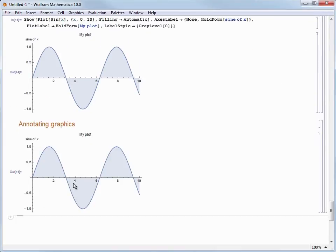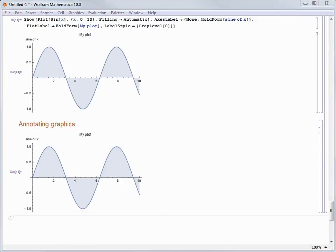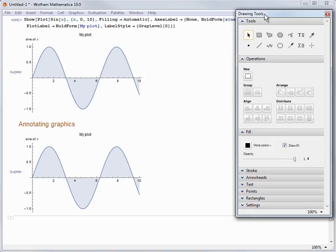I'm going to copy and paste my previous result of the sine curve with filling, and now I'm going to choose Graphics and Drawing Tools. Mathematica opens up a palette with different sections for adding objects to my graphic, like points, lines, arrows, polygons, and text.